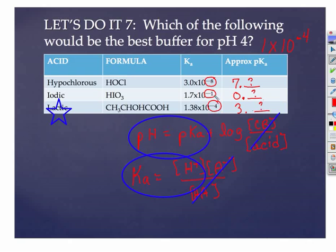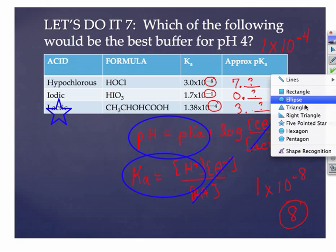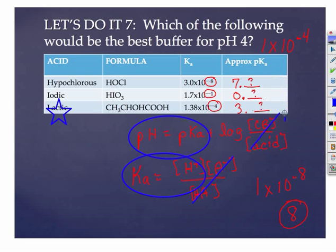You go down 1 from the power as long as there's nothing in front, or excuse me, values in front. If there's a 1 in front, if it's 1 times 10 to the minus 8th, you just grab that power. So the key here is the winner is still the lactic acid, because 3 point something is the closest to my pH of 4.